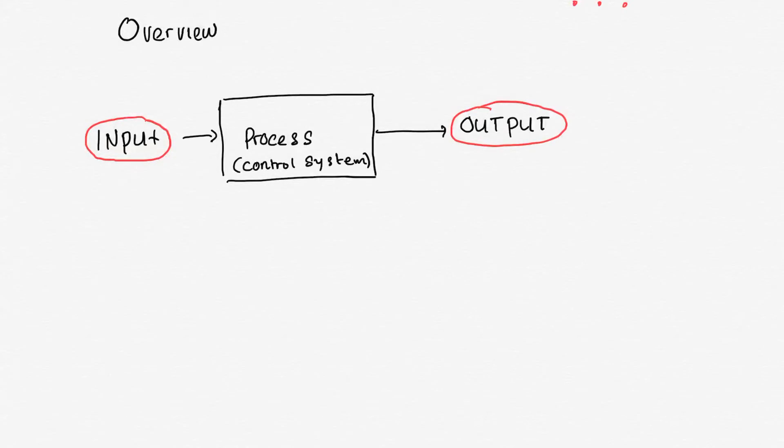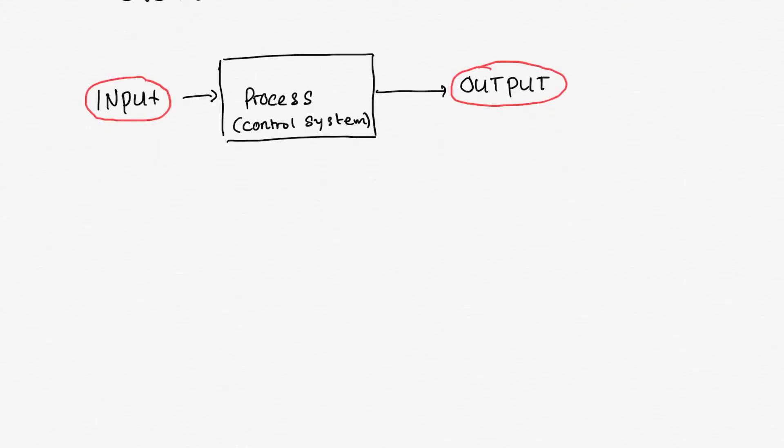Hello, welcome back again. In this section, we will walk you through the overview of control system. Let's start with a definition, shall we? A control system is a process that has an input and an output. According to Norman S. Nise in his book, a control system is a process assembled to obtain desired output given specified input with desired performance.